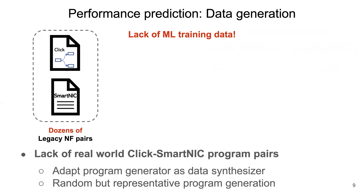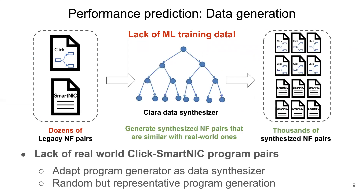Another challenge we need to solve is the lack of machine learning training data. At the starting point, we don't have many Click NF pairs, which is far less than enough to use as machine learning training input and output. CLARA tackles this problem by building a data synthesizer, which will generate thousands of synthesized NF pairs that are similar to real-world ones. CLARA achieved this by adapting from state-of-the-art random program generators in the programming language community, and made sure the output of the data synthesizer is representative of real-world NF logic. It is then translated to appear as Click NFs and SmartNIC NFs. In this way, CLARA generated enough training data for the proposed machine learning techniques.